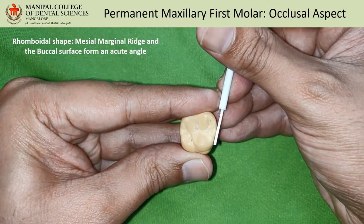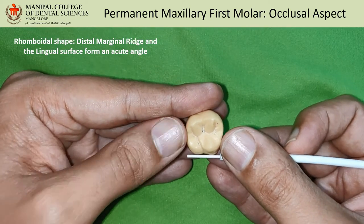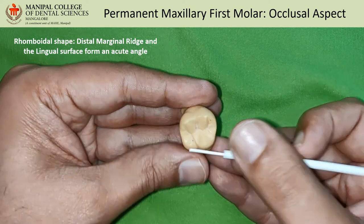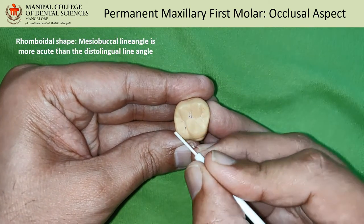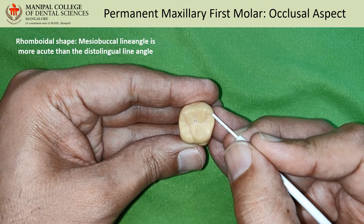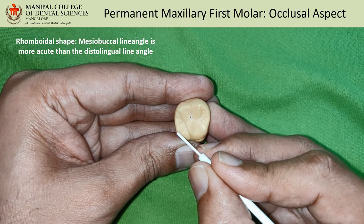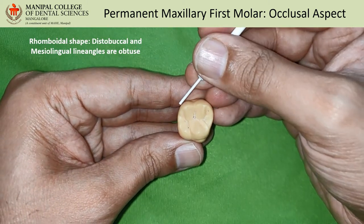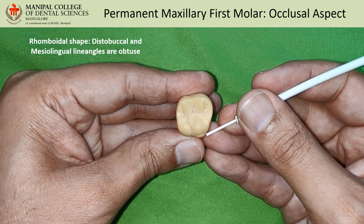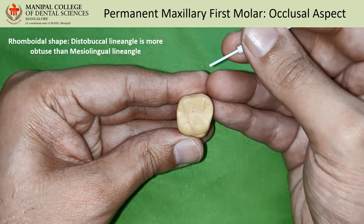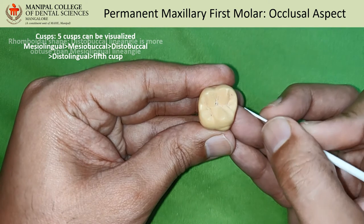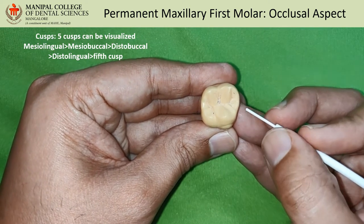The mesial marginal ridge and the buccal surface form an acute angle. Similarly, the lingual outline and the distal marginal ridge form an acute angle. The mesio-buccal line angle is more acute than the disto-lingual line angle. The disto-buccal line angle and the mesio-lingual line angles are obtuse angles, with the disto-buccal line angle more obtuse than the mesio-lingual line angle.